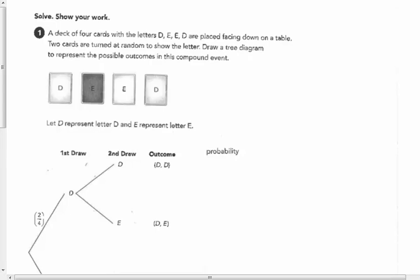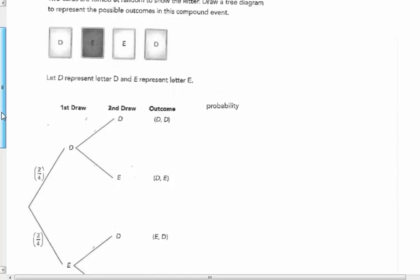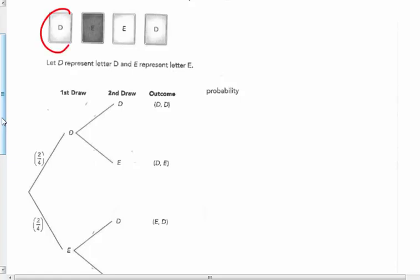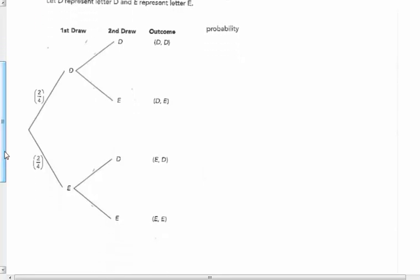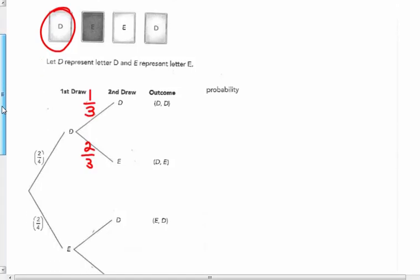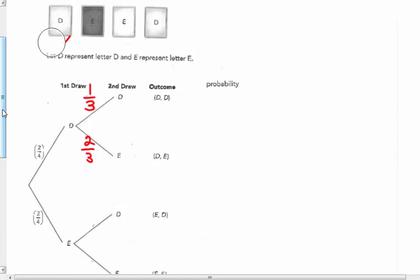In the next question here, we have those cards that said DEED on them, D-E-E-D. A deck of four cards with the letters DEED are placed facing down on a table. Two cards are turned at random to show the letter. Draw a tree diagram to represent the possible outcomes in this event. They're face down. Once you pick one of the cards, you can't pick it again. So the first D is two-fourths. The second D would only be one out of three of them left. If you pick D first, you still have the two E's out of three cards that are left. If you pick an E first, two out of four of them are an E. Now picking a second card, you have two D's left, so two out of the three cards are left. Then you only have one out of three cards that's an E.